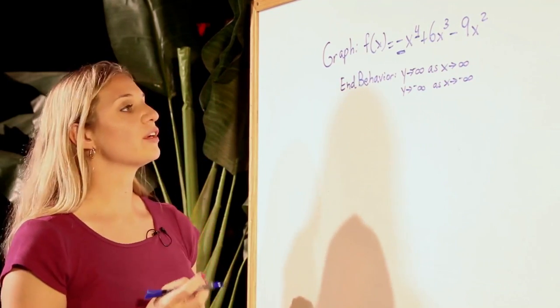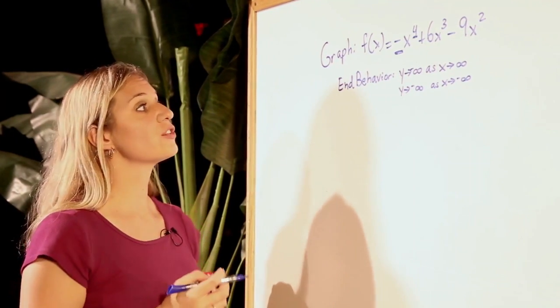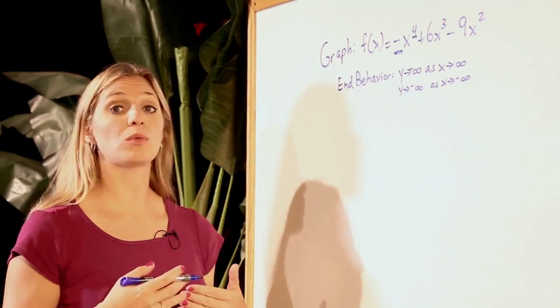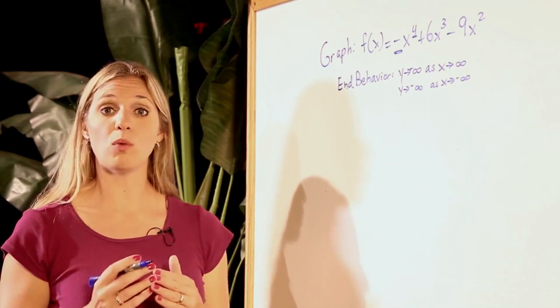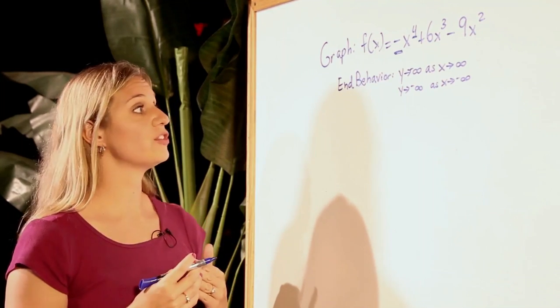So as we're looking at our infinity approaches, this graph's end behavior can be mimicked by the words down, down. We're going to be seeing it going towards negative infinity in the y, no matter what x is doing.